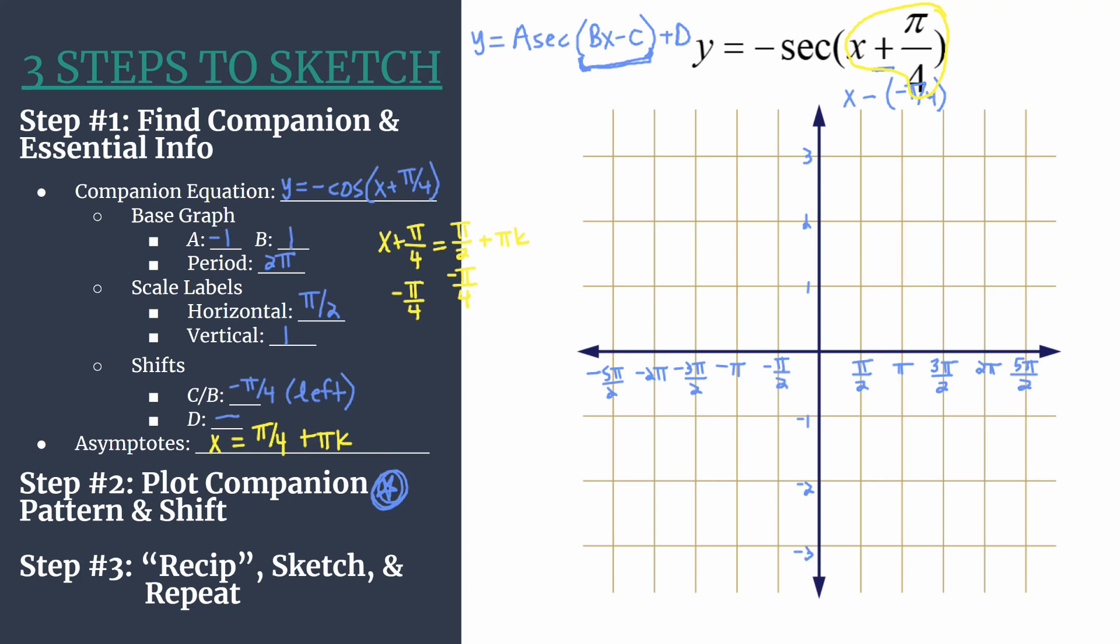So step 2, we're going to plot the companion pattern for our companion equation from step 1, and we'll take care of the shifts as well. Now note that you are going to do this in a different color. I'm going to use light blue, or you can just mark this lightly. This is not your final graph. It's just your helper or your intermediate to get to your final secant graph.